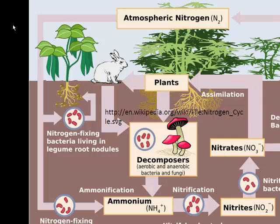Nitrogen is cycled three ways through the ecosystem: through nitrogen fixation, nitrification, and through uptake.